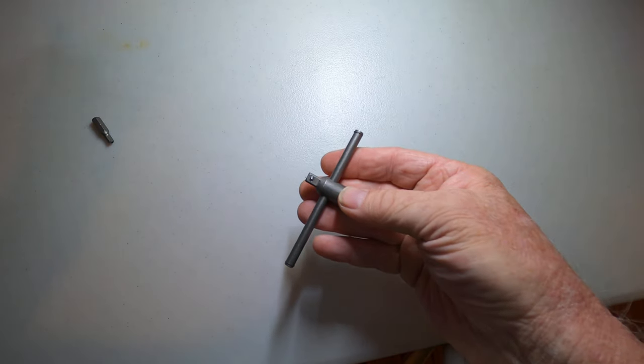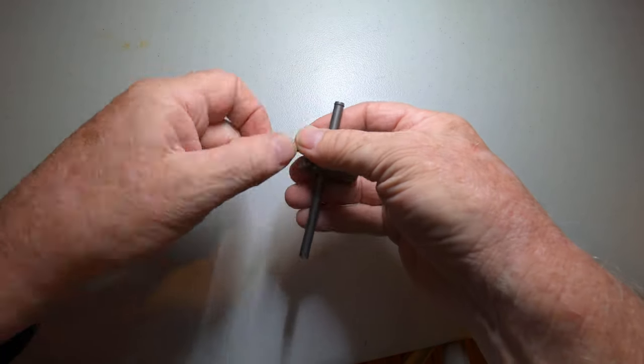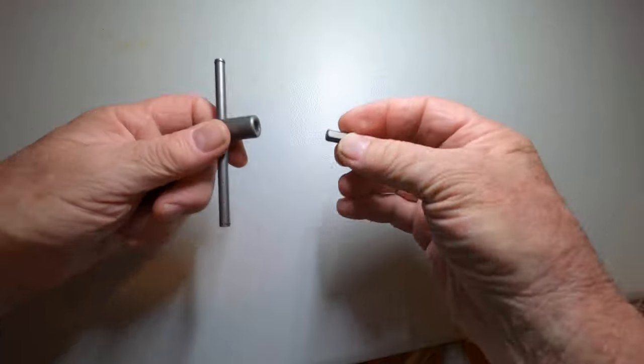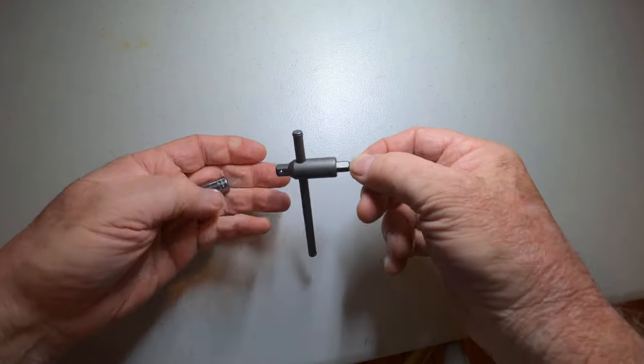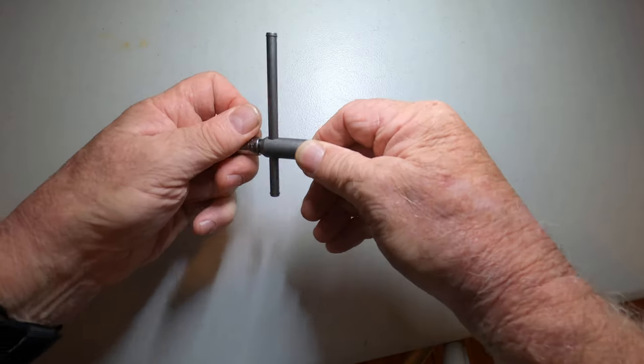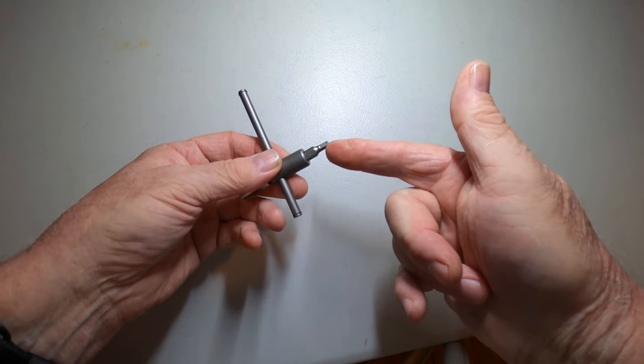We got a ball detent. But wait, there's more. Order now. No, don't order now. But there's also a quarter inch bit on the other side. So you can have one side set up for a socket, the other side can have a bit.